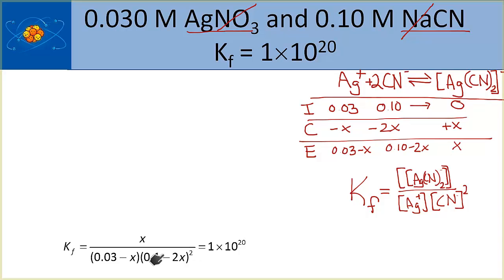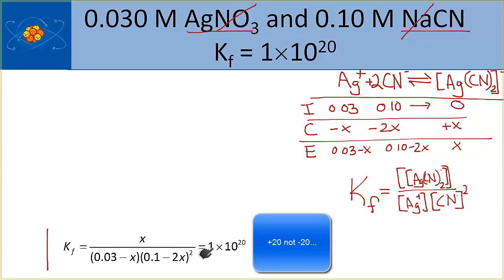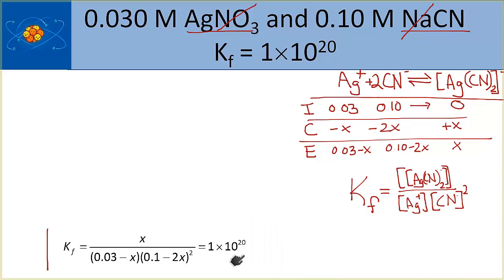Looking at the equation, this is where we plug in the concentrations of silver, cyanide, and the complex ion. If you solve this on a calculator, the chemically meaningful solution gives x approximately equal to 0.03. This is a problem because when you plug that in, the silver ion concentration becomes effectively 0 — not truly zero, but very low. What we need to find is that actual concentration, so because K is large we treat this like a limiting reactant problem.